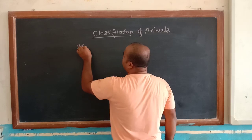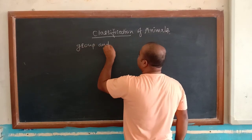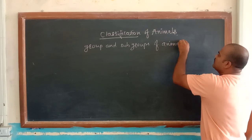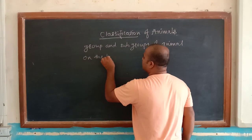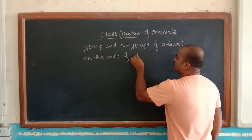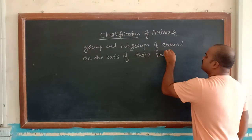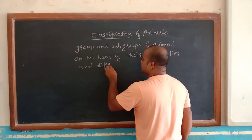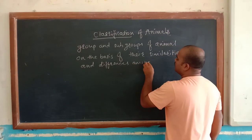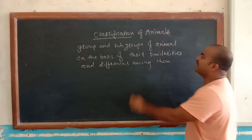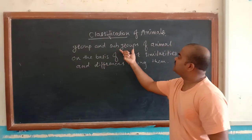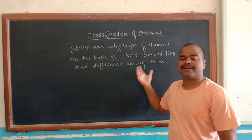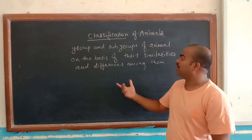Classification is a grouping and subgrouping of animals on the basis of their similarities and differences among them. It is a very simple definition — a group and subgroup of animals on the basis of their similarities and differences among them.